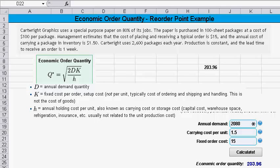It says Cartwright Graphics uses a special purpose paper on 80% of its jobs. The paper is purchased in 100 sheet packages at a cost of $100 per package. Management estimates that the cost of placing and receiving a typical order is $15 and the annual cost of carrying a package in inventory is $1.50. Cartwright uses 2,600 packages each year. Production is constant and the lead time to receive an order is one week.